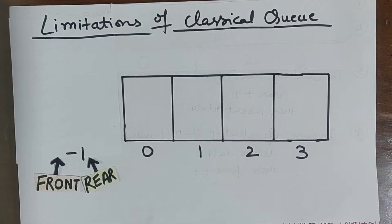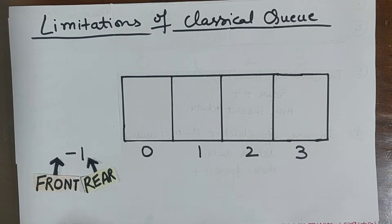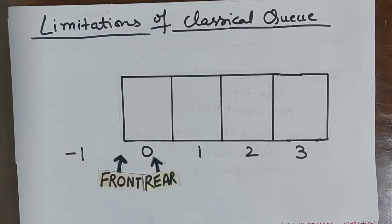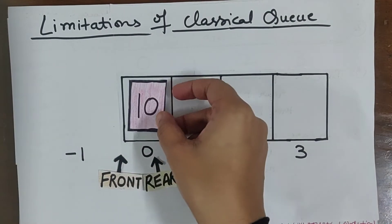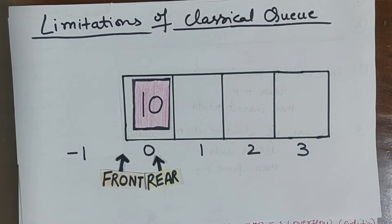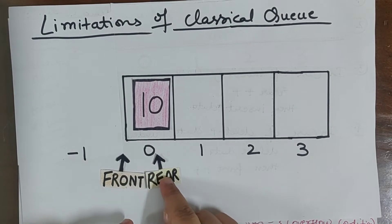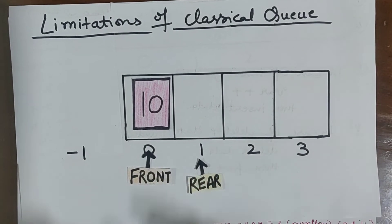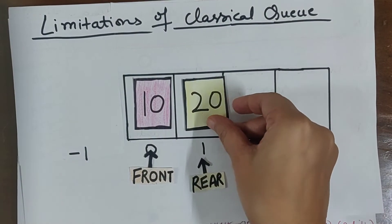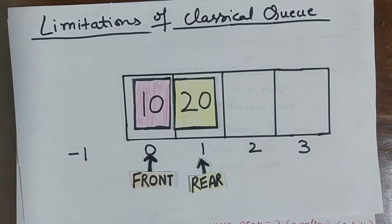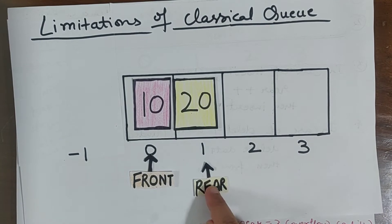Now for the first time when I insert some data, I have to point front and rear both at index zero, then I will insert the data. Again, if I want to enqueue 20, first I have to increase rear to rear plus one, and then I will insert the data. Front will remain at zero.